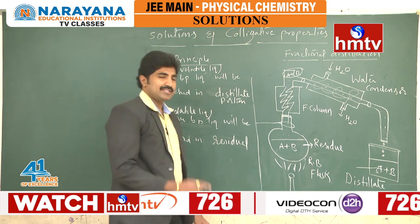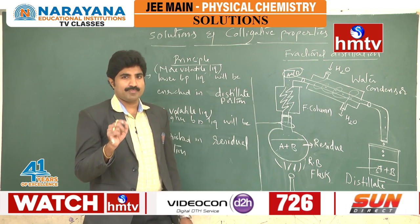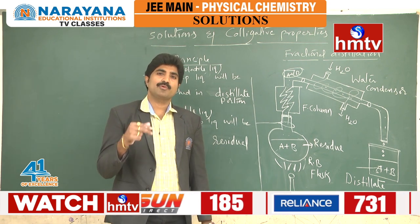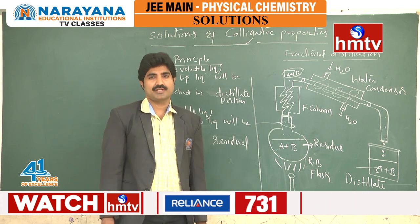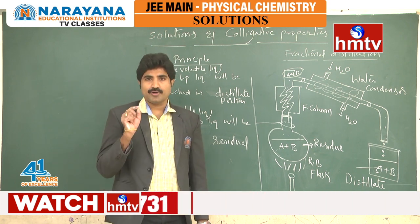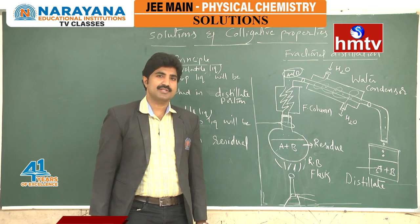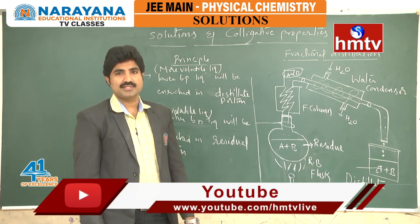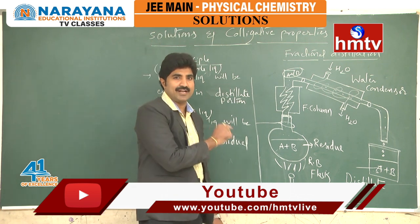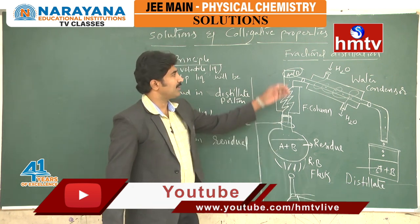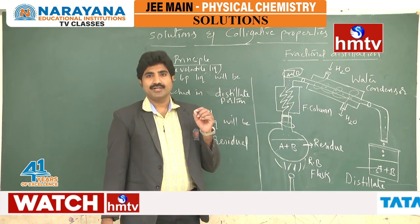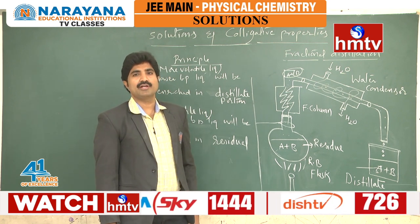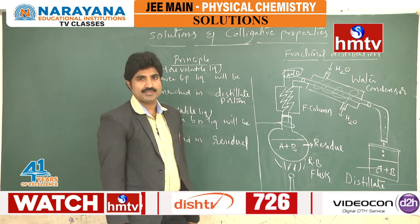Simple distillation is used to separate two liquids from a mixture when the boiling point difference is more than 40 degrees centigrade. But if the boiling point difference is less than 40 degrees centigrade, or boiling points are closer, we cannot use simple distillation — we have to use fractional distillation. Fractional distillation is used to separate two liquids from the mixture when the boiling point difference is less than 40 degrees.